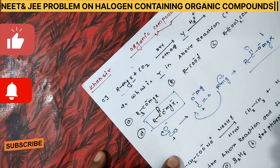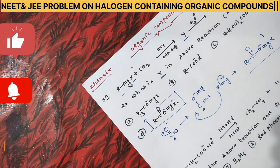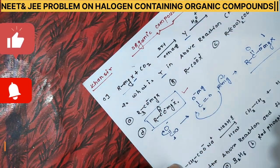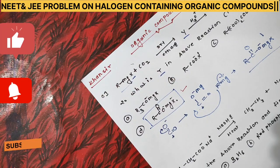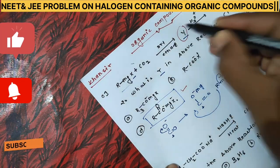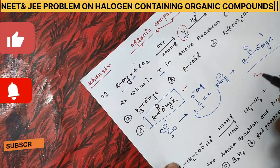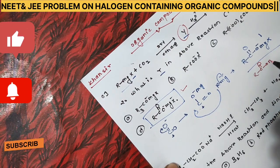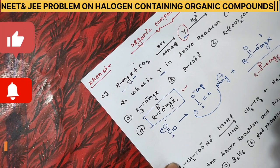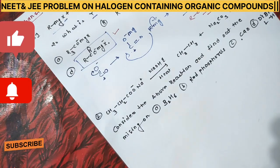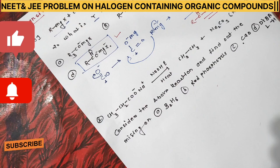I hope you understood this. In this reaction, they have directly asked what Y will be — Y is the Grignard reagent complex, that is RCOOMgX. I hope you understood this.